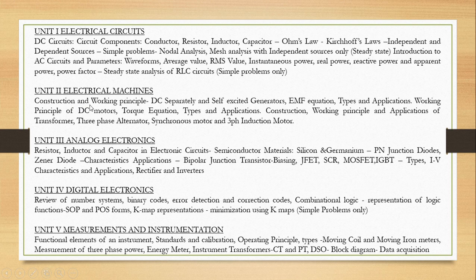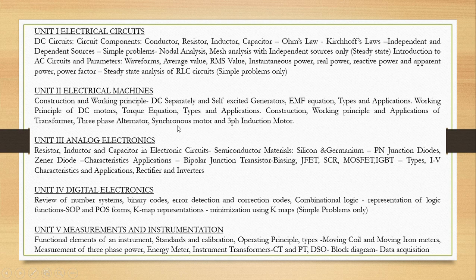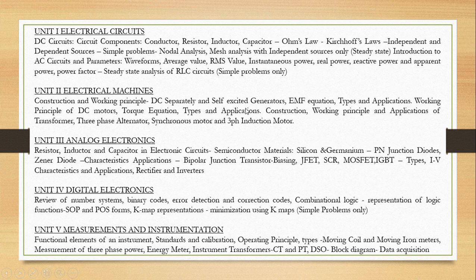Unit number 2 is electrical machines that covers both DC and AC machines. In DC machines, DC motor and generators are involved. In AC machines, transformer, three-phase alternators, synchronous motor and three-phase induction motors are given. For all of these machines, we have to know about construction and working principle and related equations. If generator means EMF equation, motor means torque equation. All of these equations are given in the syllabus.